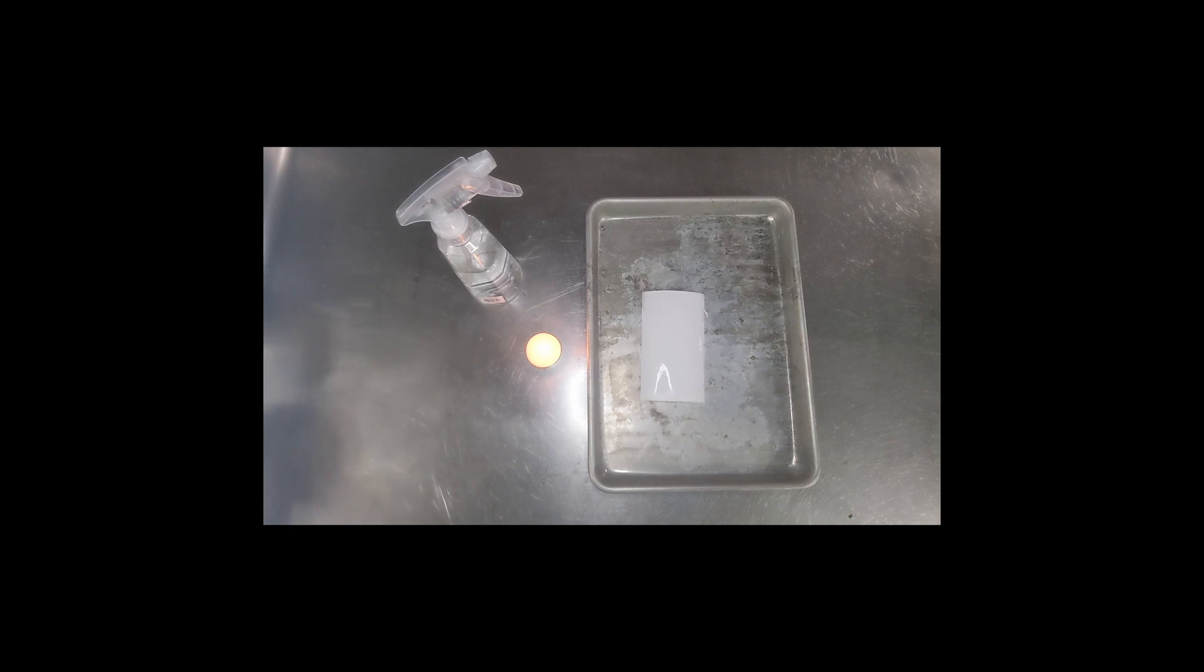What we're going to do is model a plate moving over a mantle hotspot. So this wet card is going to be our tectonic plate, and the candle is going to be our hotspot.